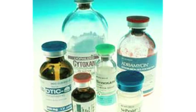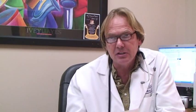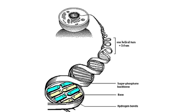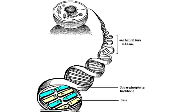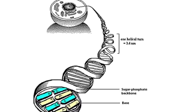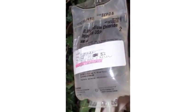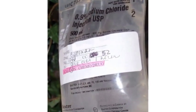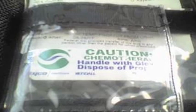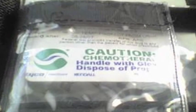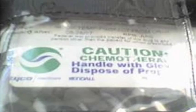One class is called alkylating agents, and essentially what they do is they interfere with or kill the cell's DNA — the genetic portion of the cell that keeps it from replicating. Another class, called platinum drugs, is oftentimes actually classified with the alkylating agents and does a similar sort of thing. One of the common drugs there is called cisplatin.